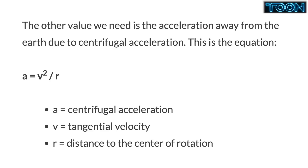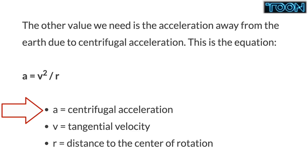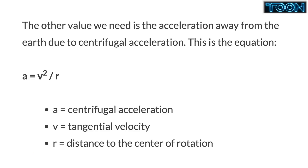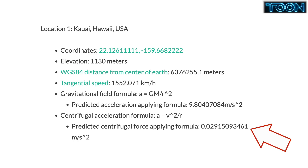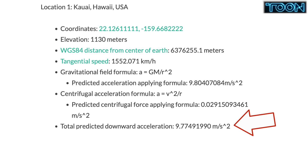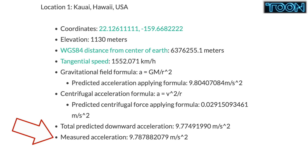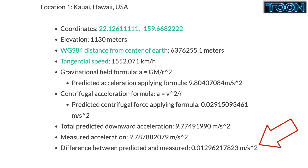Next, we need to subtract the acceleration due to centrifugal force. This equation is pretty simple: A equals V squared over R, where A is the acceleration away from the center, V is the tangential velocity, and R is the distance from the center of rotation. Using the radius and tangential velocity calculated on the web page earlier, we get 0.029150934 meters per second squared. This is subtracted from the acceleration due to gravity alone, giving us a final prediction of 9.7749199 meters per second squared. The measured value is 9.787882079 meters per second squared, giving us a difference of 0.01296217823 meters per second squared. That is very close.